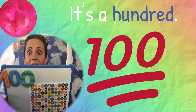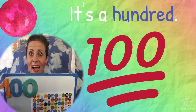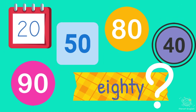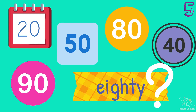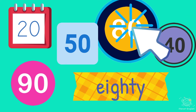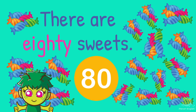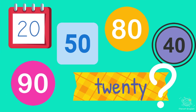It's 100. That's the word and number, which is 80. 5, 4, 3, 2, 1. There are 80 sweets, which is 20. 5, 4, 3, 2, 1.